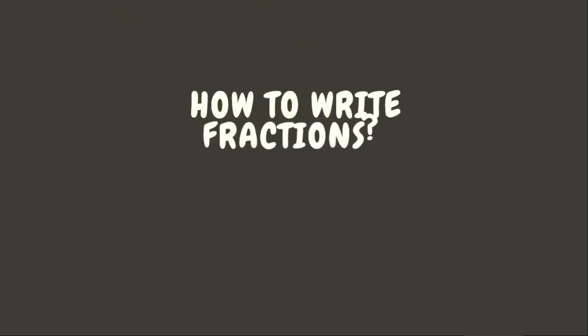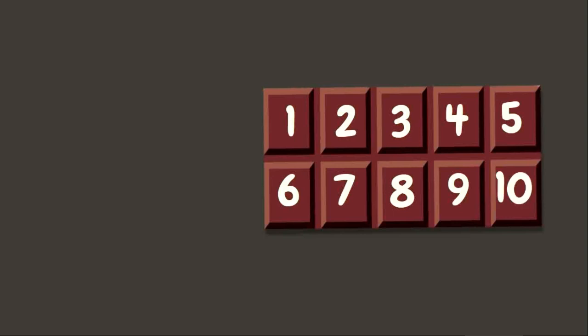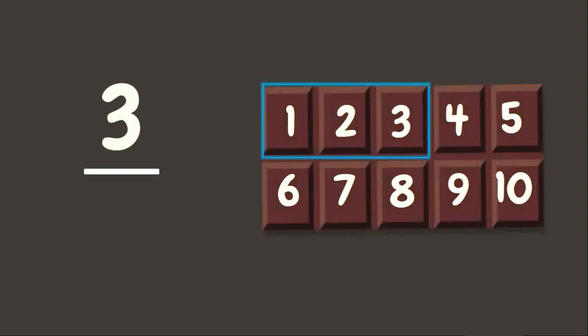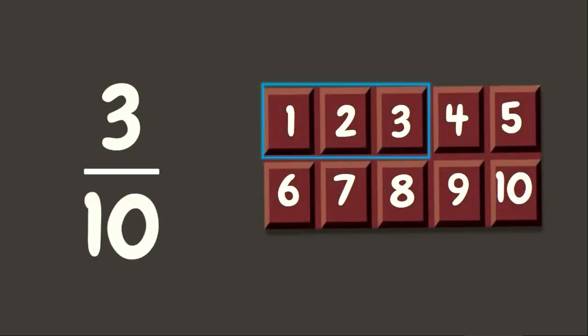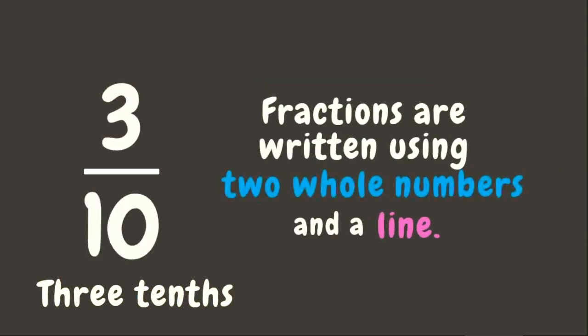How to write fractions? You have here one whole chocolate bar. It is divided into 10 equal parts. You got hungry and ate 3 parts. In fraction, it is 3 over 10 equal parts or 3 tenths. Fractions are written using two whole numbers and a line.